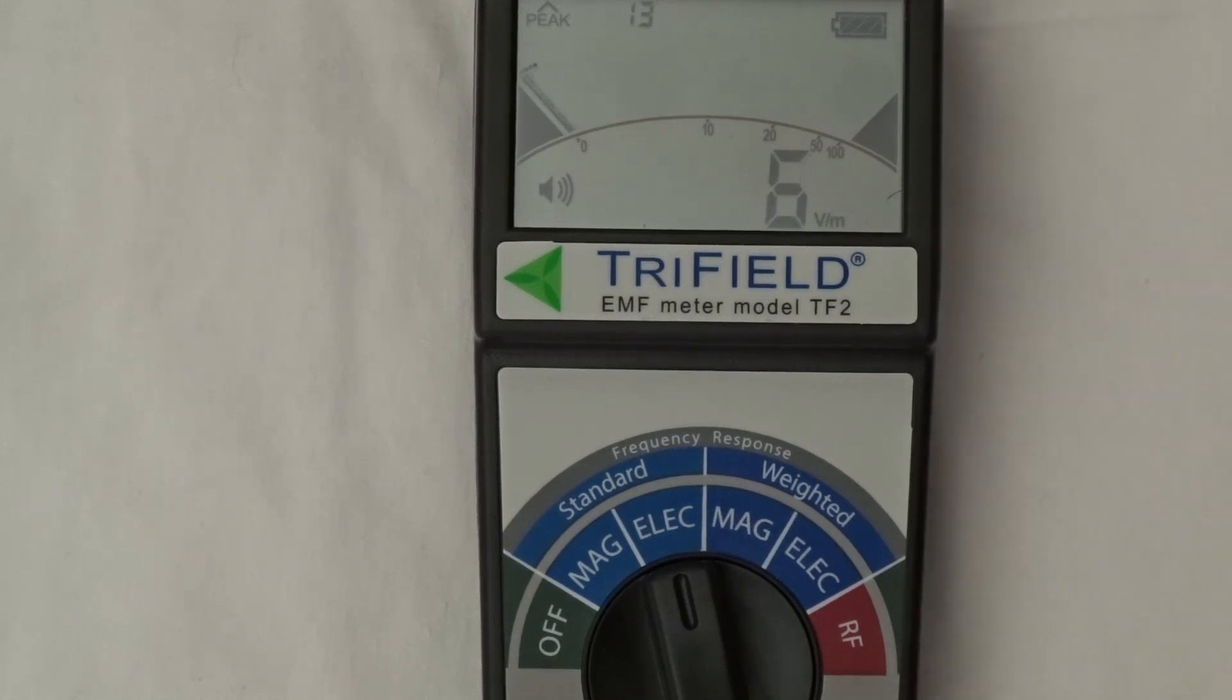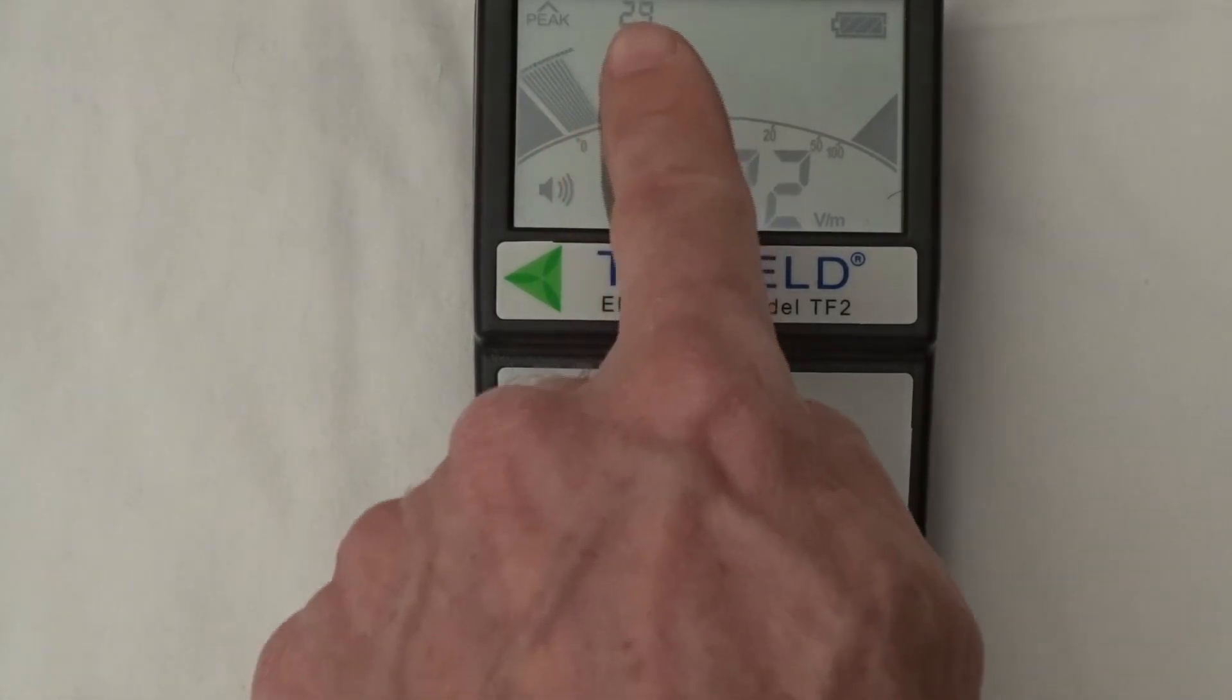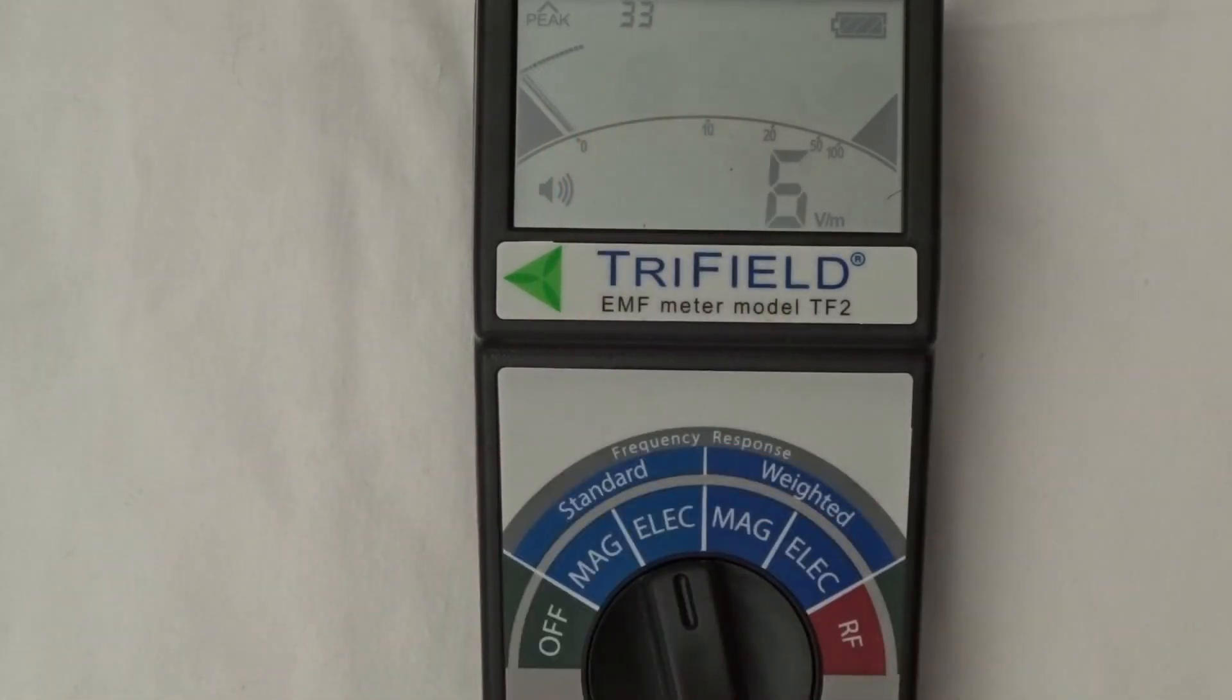Above that is the bar graph, which gives us the same information on a scale of 0 to 100. Top left we've got the peak measurement unit in VM, which tells us the highest peak that's been measured and holds it for 3 seconds.